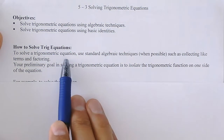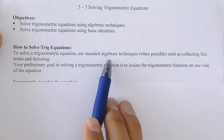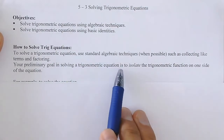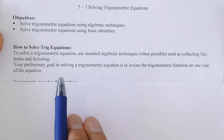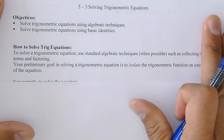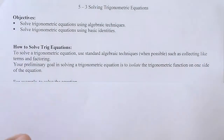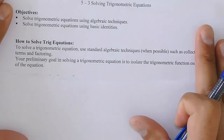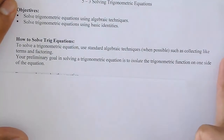We use standard algebra techniques, including factoring, and we have to isolate the trig function on one side of the equation. You do not need to copy this down — I will have this page uploaded on Schoology so you can look at it and use it as reference. I want to go through an example that's already worked out; again, you do not have to copy it down.